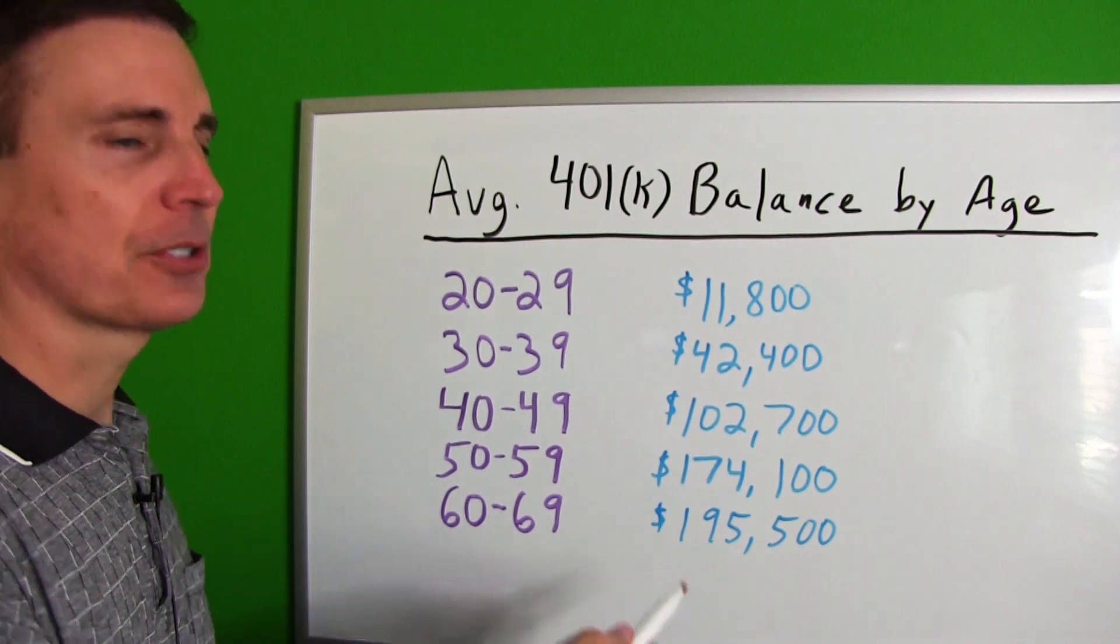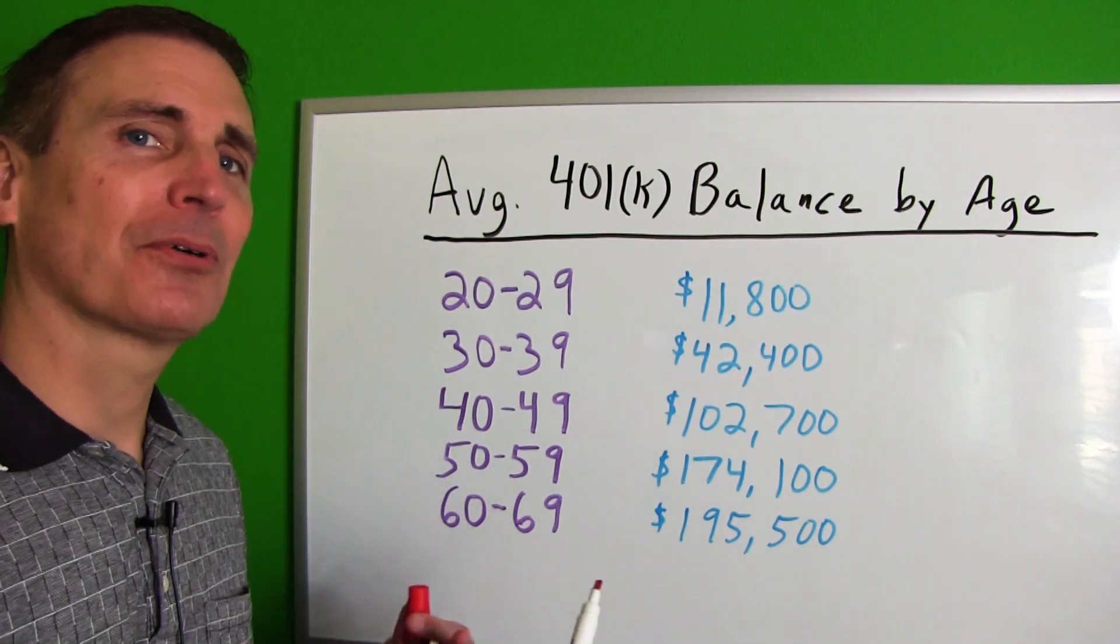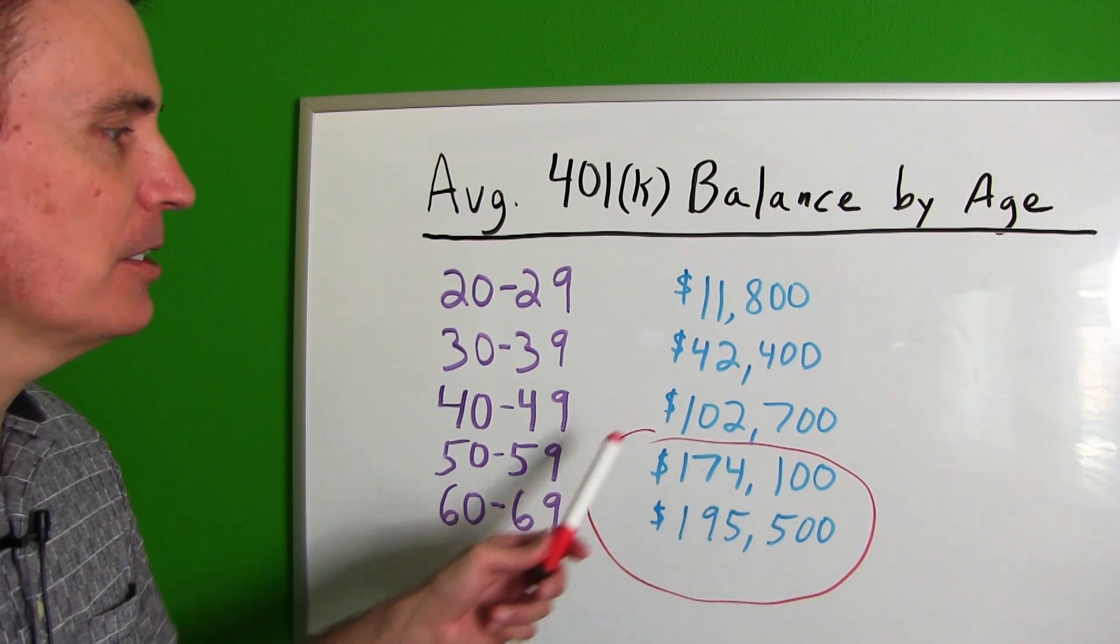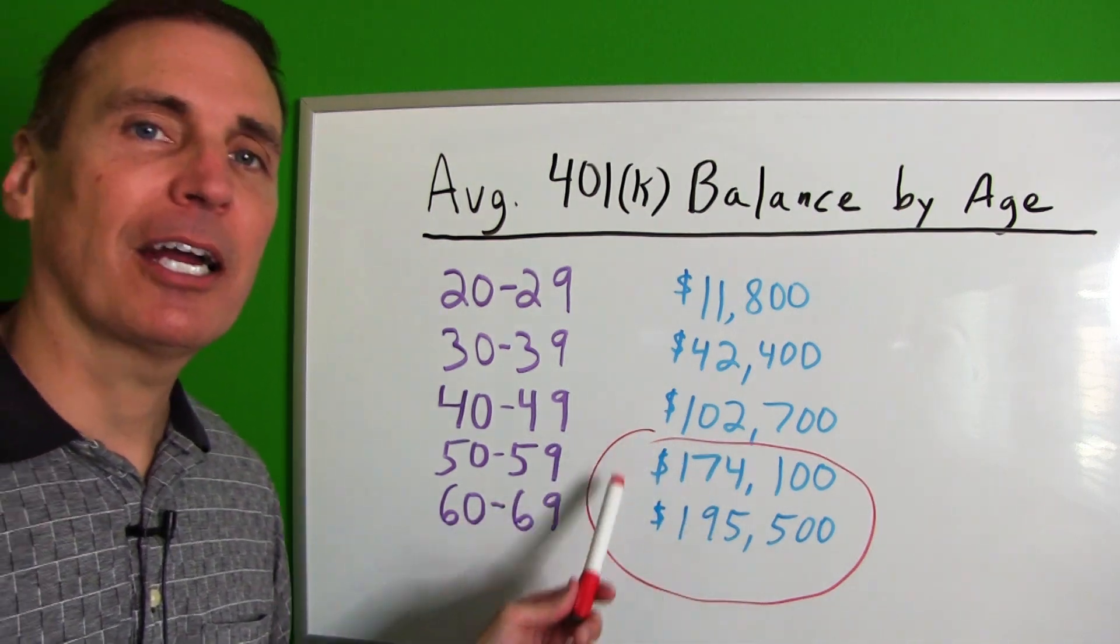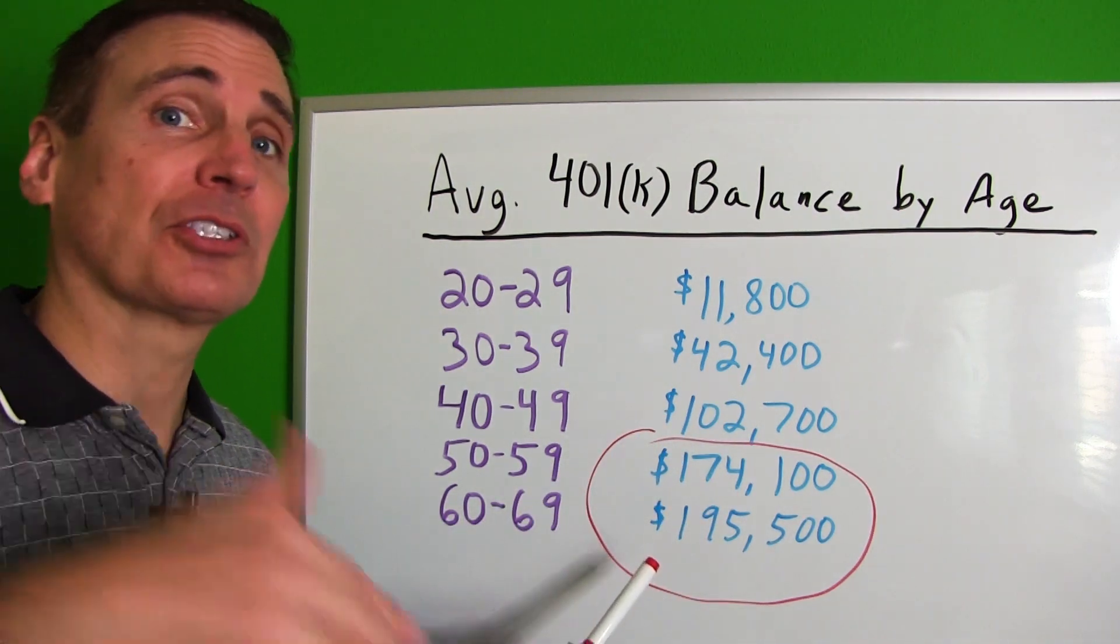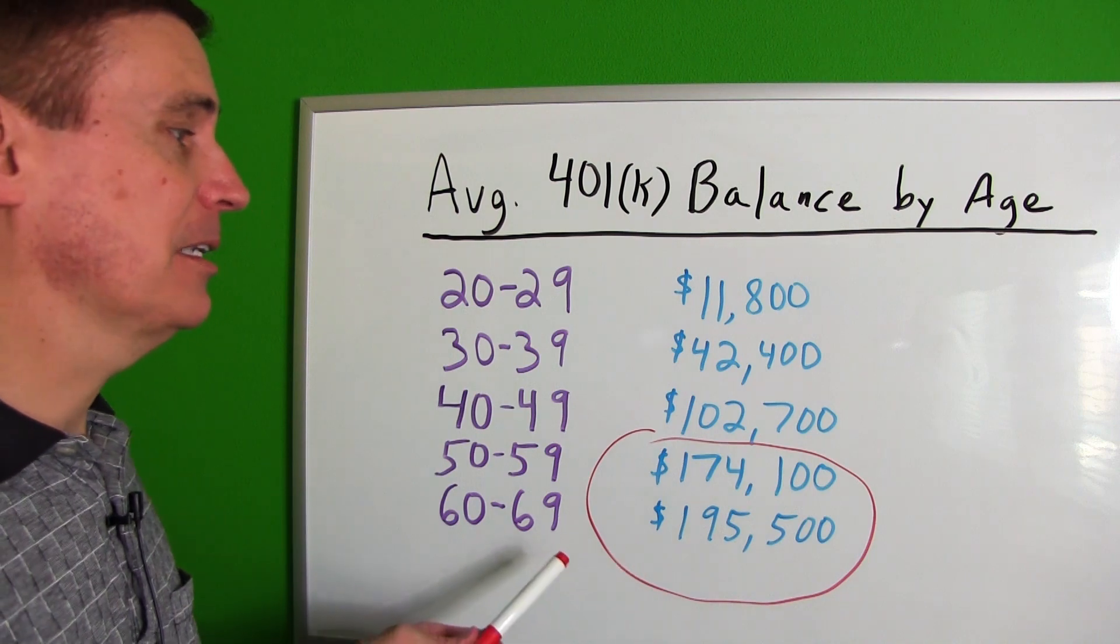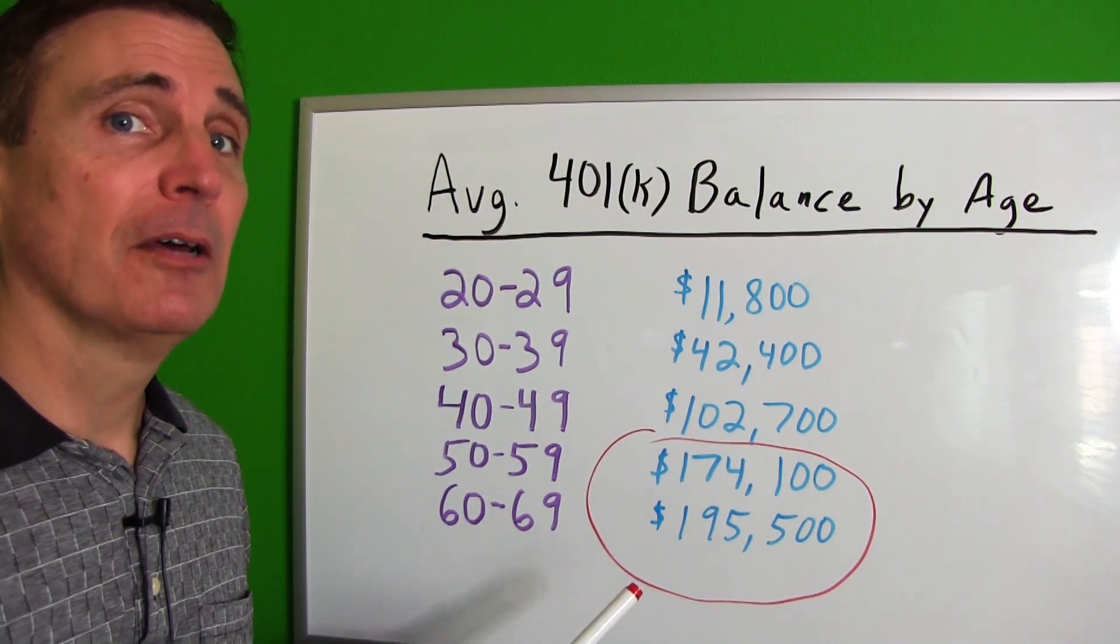Now these numbers are kind of alarming. These values are really low when you think about needing money for retirement. The 50 to 69 year olds don't have near enough saved up for an independent retirement. And even though they'll get Social Security benefits, that's still not going to be enough to really have a secure retirement for most people.